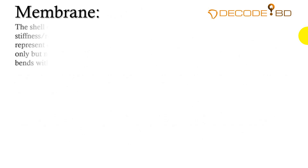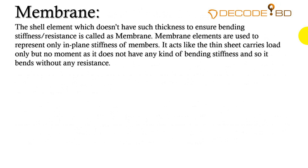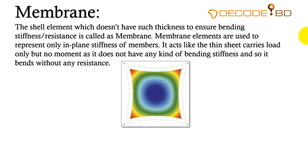Membrane: the shell element which does not have sufficient thickness to ensure bending stiffness or resistance is called a membrane. Membrane elements are used to represent only in-plane stiffness of members. It acts like a thin sheet — it carries load only, but no moment, as it does not have any bending stiffness. If a sheet has very small thickness tending to zero — such as 1 mm or 0.5 mm — then the sheet will act like a membrane: it will bend without any bending resistance and will not carry any moment.